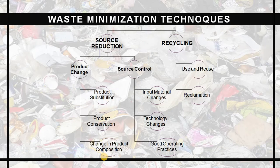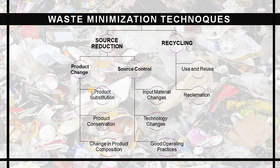Here you can see the waste minimization chart, where you can reduce waste by two things: first, source reduction, and second, recycling. In source reduction, you can do product change or control the source. In product change, you can do product substitution, product conservation, or change in product composition.